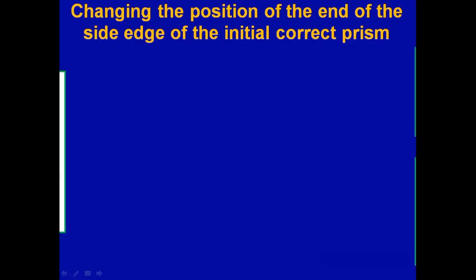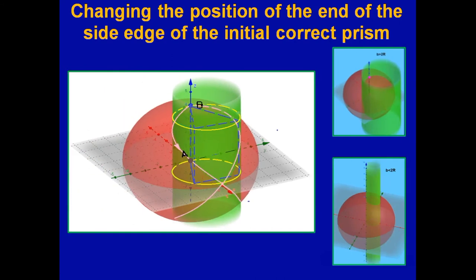So, for the right prism, if the length of the lateral edge b is fixed and the length of the lateral edge is equal to the diameter of the circle described around the base,